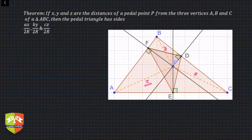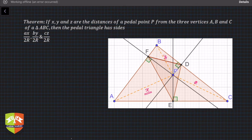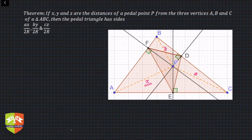Now we have to prove that the three sides of the pedal triangle — triangle DEF, formed by joining the feet of the perpendiculars from P — have specific lengths. We need to find the lengths of sides DE, EF, and FD.